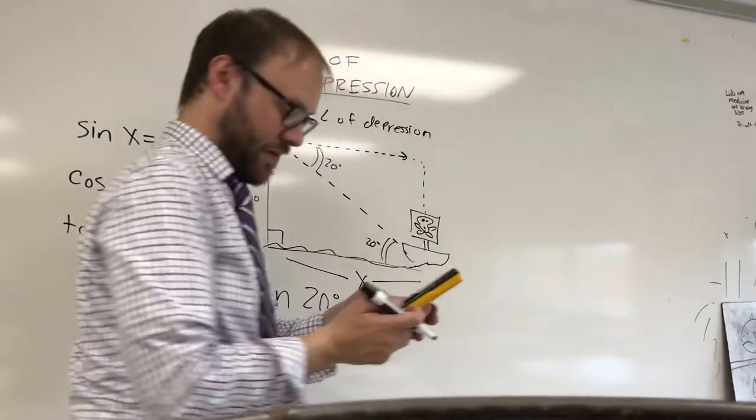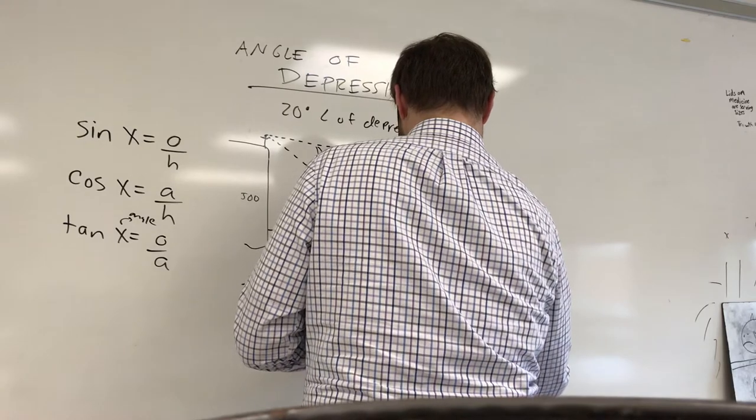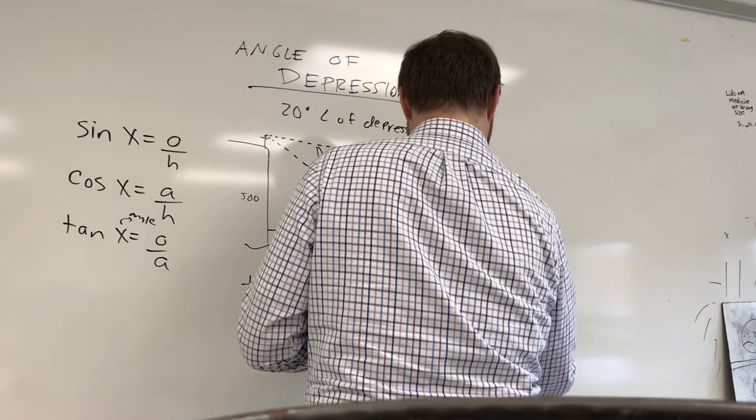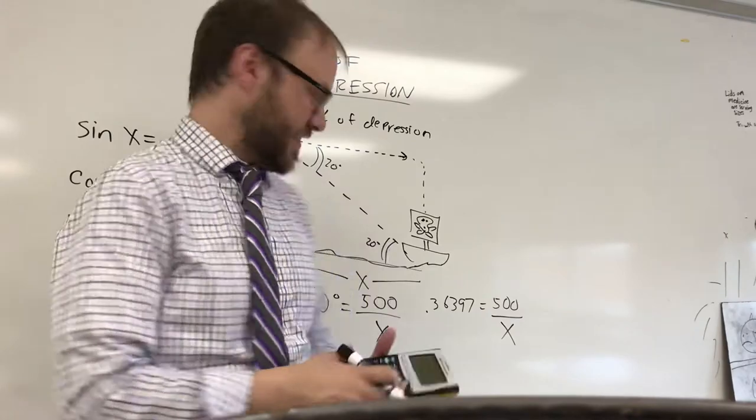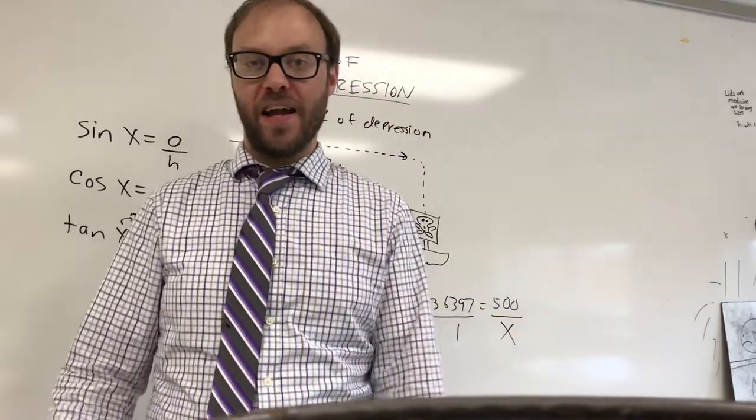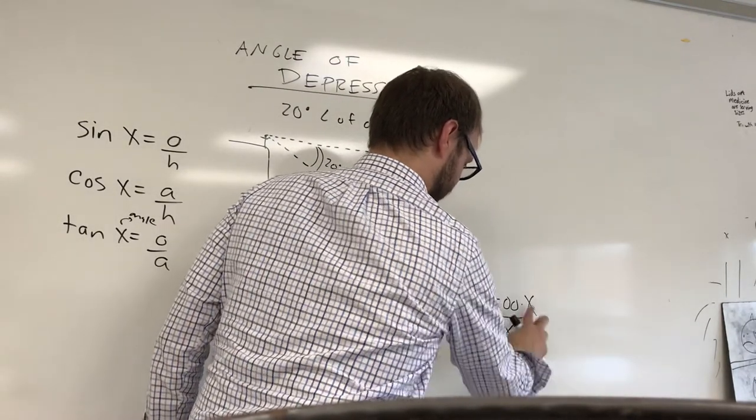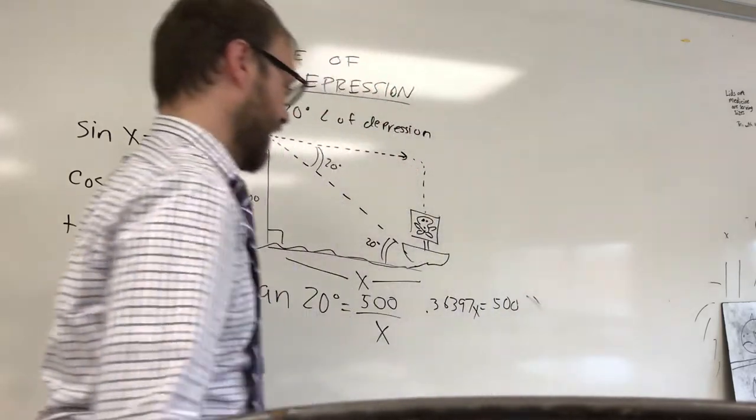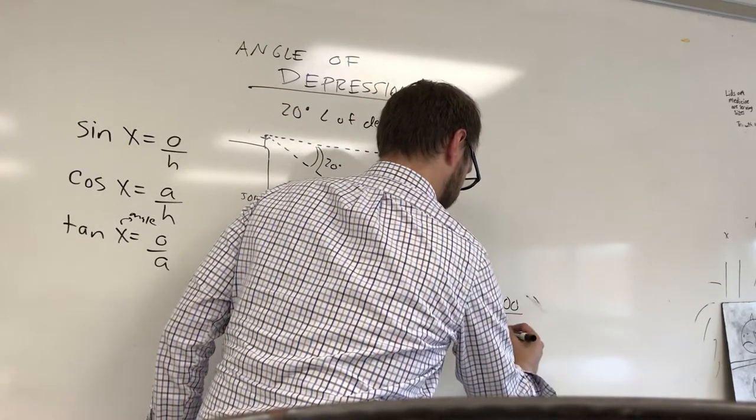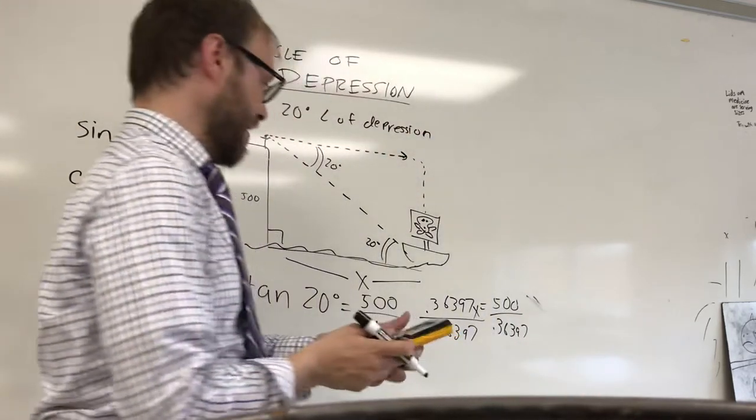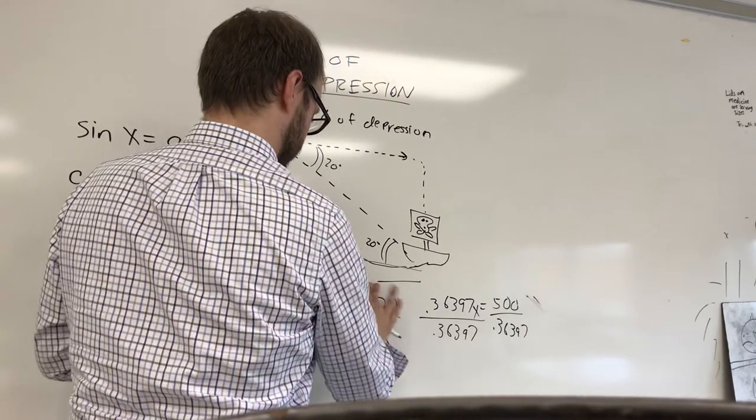So tangent of 20. Make sure you're in degree mode by the way. Tangent of 20 is going to be about 0.6397 is equal to 500 over X. Notice we have X in the denominator here. You don't want X in the denominator. So either do this over 1 and cross multiply and solve your proportion, or you can multiply both sides by X to get the X out of the denominator and you're going to end up canceling your X's on the right. We're going to divide both sides by that decimal that was coming from the tangent of 20. So 500 divided by the tangent of 20.